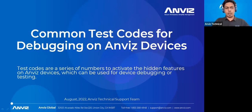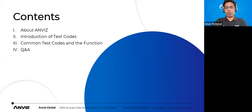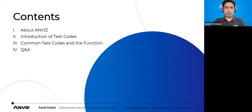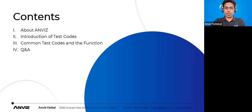Let's start with the training so we can get more information on what exactly we are going to cover. Today we will have a brief on the company — what Anviz is, where we focus, and everything. Then the main core subject of the training is the test codes. We will have an introduction to test codes, show a number of test codes used for troubleshooting devices and their components, cover common test codes and their respective functions, and then have a question and answer session.